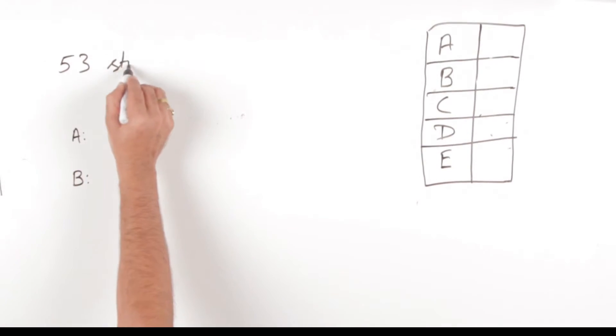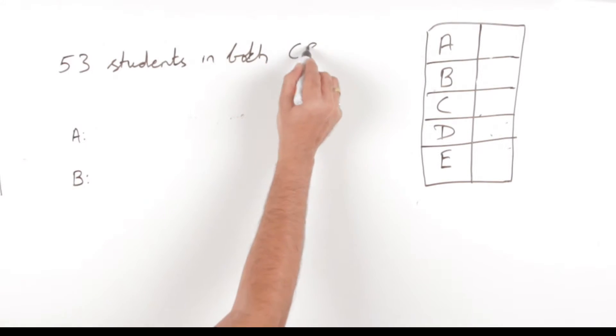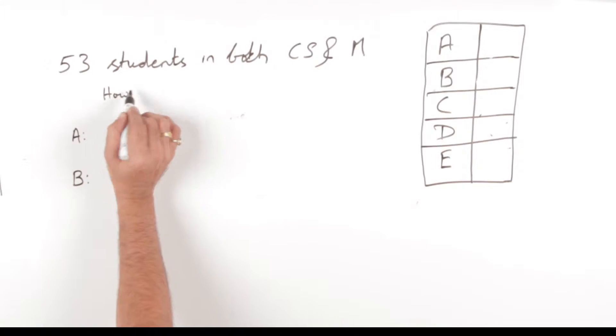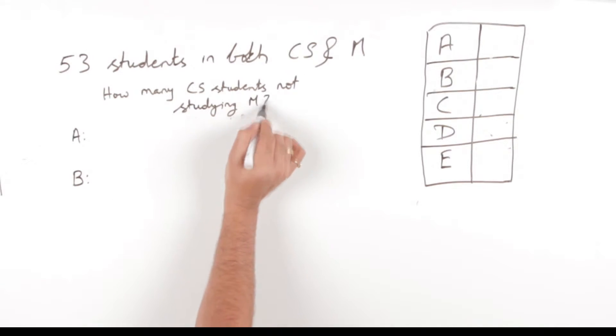In this problem, we are told 53 students study both computer science and mathematics. How many computer science students are not studying mathematics? This is basically a simple set problem where you have two sets: one of CS and one of M. We draw the Venn diagram and know that the overlapping space between computer science and mathematics is 53.